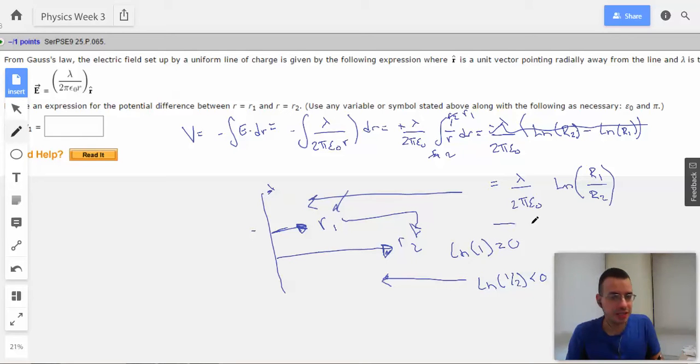So this would give us actually a negative number and if we're moving from R1 to R2 like they're kind of sort of saying in the problem then I would say that's correct. And so the expression then would exactly be lambda over 2 pi epsilon naught natural log of R1 over R2.